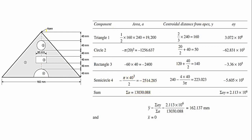Since the figure is symmetric about the y-axis, x̄ = 0. We only calculate y-distances. For the triangle: centroid is at 2/3 of height from the apex (pointed end), which is 2/3 × 240 = 160 mm. For the circle: its centroid is at 40 (distance to circle center from apex) + 20 (radius) = 60 mm... corrected as 40 + 20/2; diameter is 40 so radius is 20, giving distance = 40 + 20 = 60 mm... answer is 50 mm from the apex.